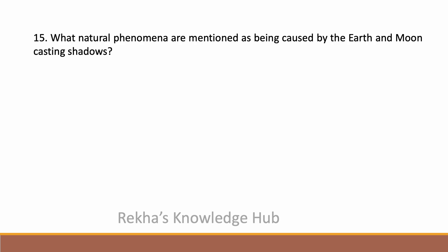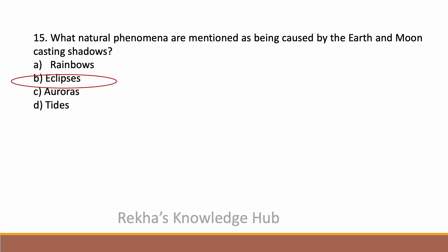What natural phenomena are mentioned as being caused by the earth and moon casting shadows? Options are: rainbows, eclipses, auroras, or tides. The correct answer is eclipses.